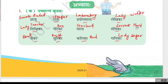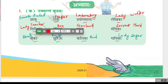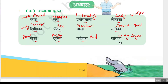Sevika means servant maid. Nauka means boat. Churika means knife. Kalika means bud. Gaika means lady singer. If you see, these all are ākara ending words. Though the meanings are not required, just for understanding purpose I mentioned the meanings also.